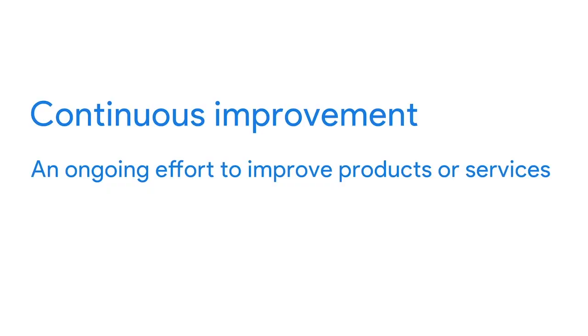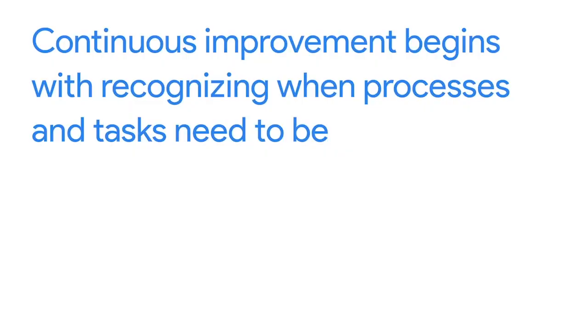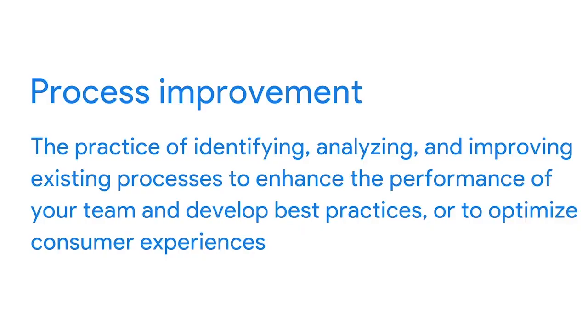In this video, we'll explore how to advocate for and create continuous improvements in a project by learning about process improvements. Continuous improvement is an ongoing effort to improve products or services, helping ensure that a project steadily makes its way toward the best possible outcome. It begins with recognizing when processes and tasks need to be created, eliminated, or improved. Process improvement is the practice of identifying, analyzing, and improving existing processes to enhance team performance, develop best practices, or optimize consumer experiences.